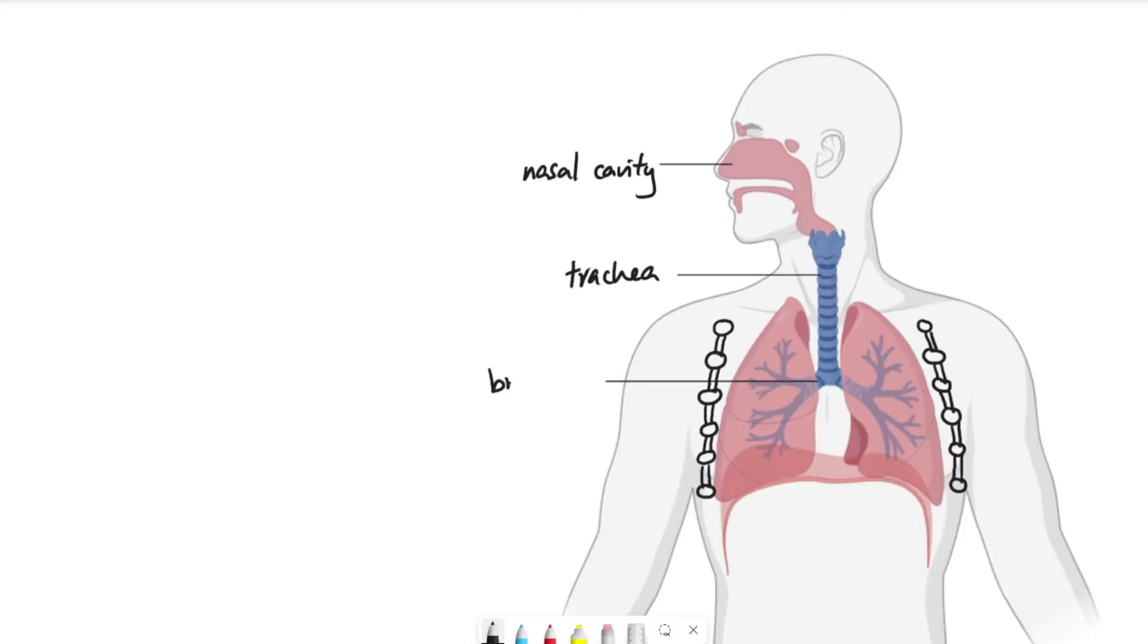This is called the bronchus. Now bronchus is singular. If it's plural, it's bronchi. So the two bronchus go to the left and the right lungs.